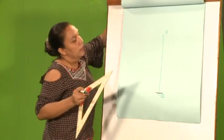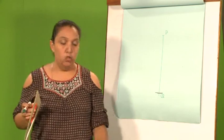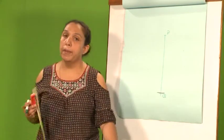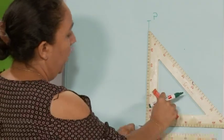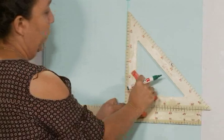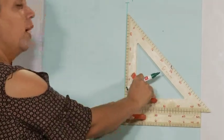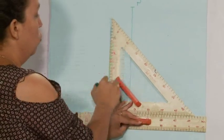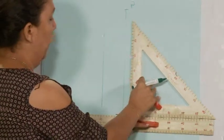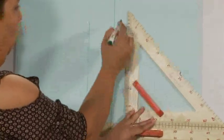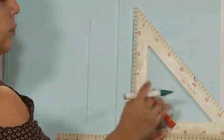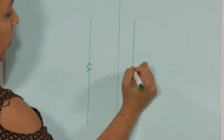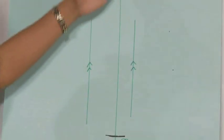Now, we need to draw a line parallel to PQ. Place your set square along the line and the ruler perpendicular to the line. Then, move either left or right. Suppose I want it here — draw your line — then move here and draw another line. We have two parallel lines and these lines are parallel to PQ.